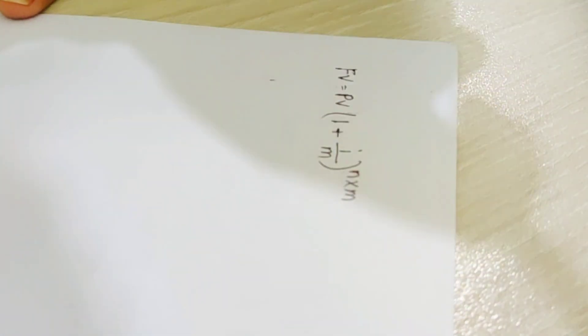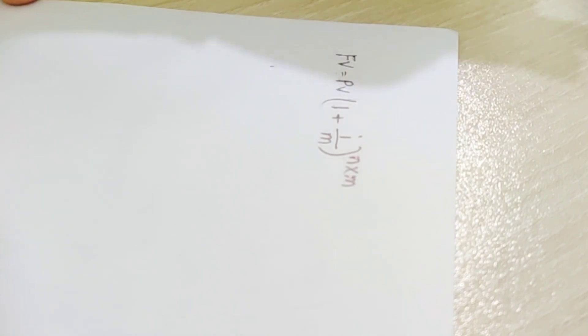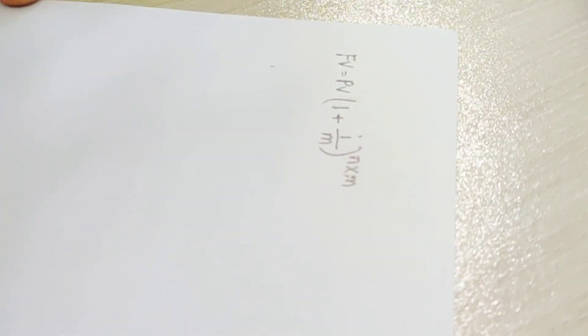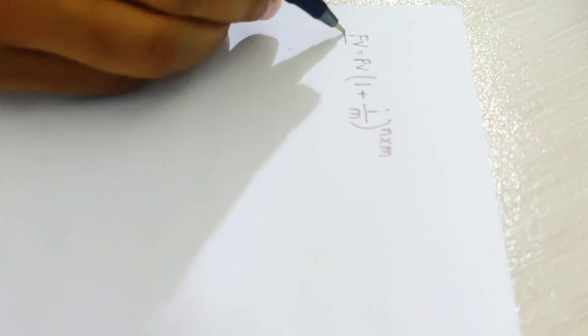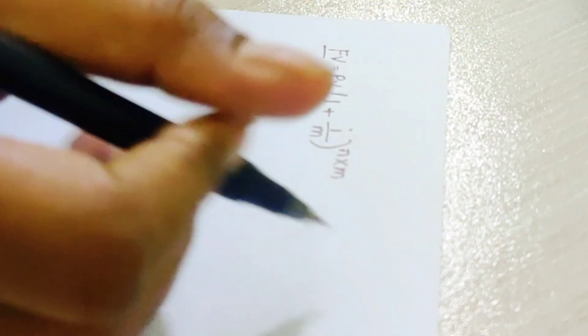We have to ask questions about how much is in the account at the end of the year, which means that the future value is what we need to find. So, what is the present value? We have to write the value side.